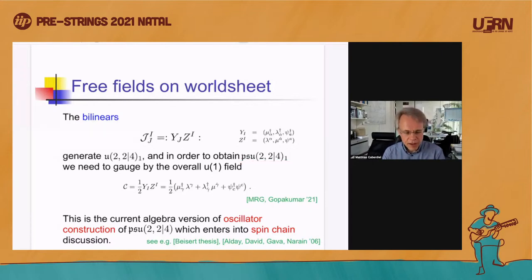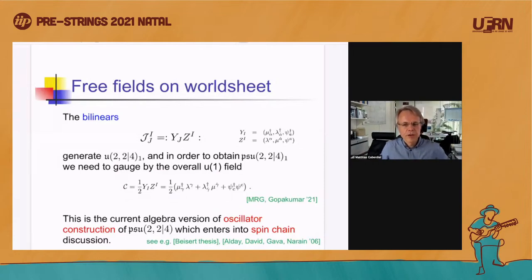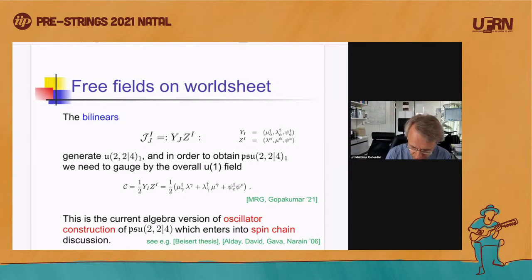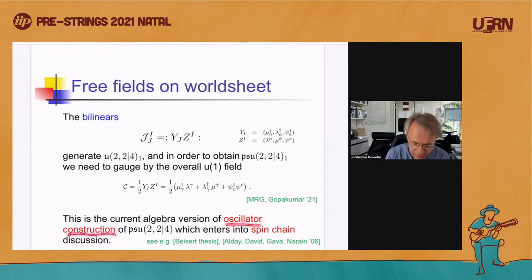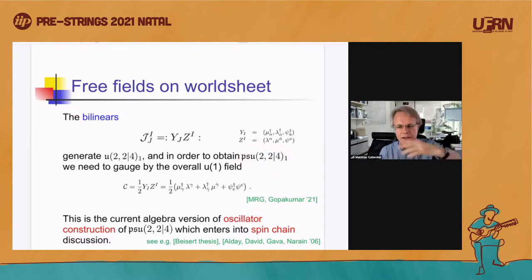This oscillator construction of PSU(2,2|4) had appeared before in the spin-chain literature — prominently in Niklas Beisert's thesis — as a good description of the N=4 spectrum. What we're doing is essentially the affinization of that oscillator construction. The zero modes provide a copy of PSU(2,2|4), mapping physical states to physical states and guaranteeing everything falls into the right representations. This is encouraging — we're going in the right direction.